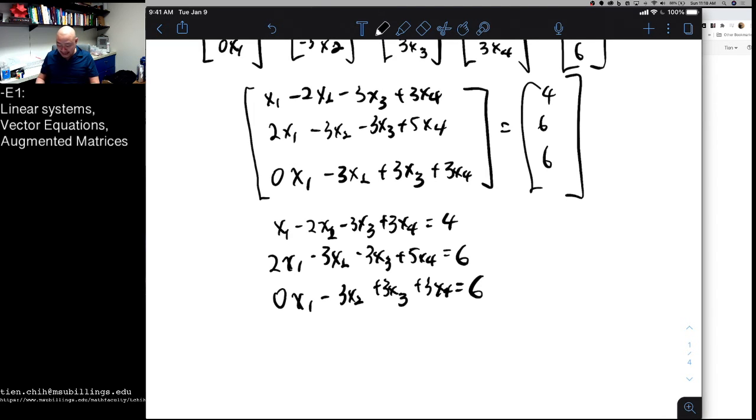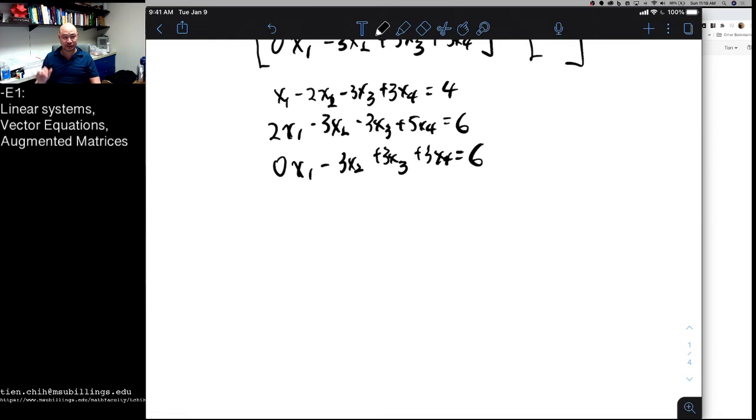So the last step, then, is to take this system of equations and record it as an augmented matrix, and we do so, we use the geometry, or the layout, of this system of equations to inform how this should go. What we want is to capture the essential information of the system. So what we're going to get is a 3 by 5 matrix.